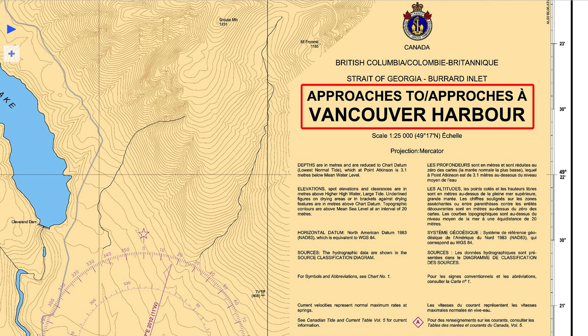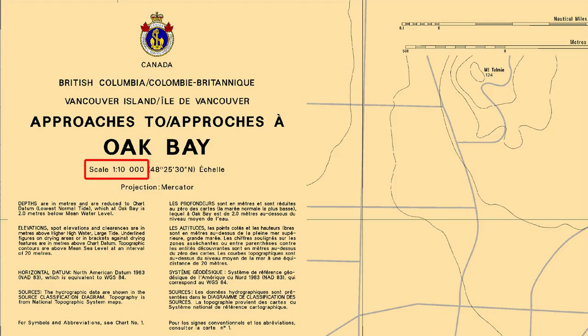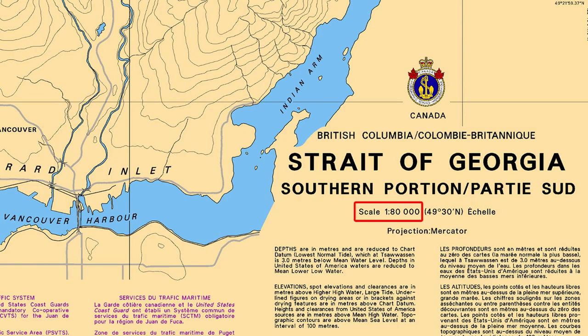Working your way down the title block, the next thing you come to is the title, which is self-explanatory. Then we have the scale of the chart, which is essentially the ratio of a distance on the chart to the corresponding distance on the ground or water. In this example, the scale is 1 to 25,000. The closer to life size — 1 to 1 — the larger the scale. So 1 to 10,000 is considered large scale compared to 1 to 80,000, even though 1 to 10,000 is the smaller number.